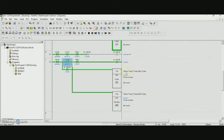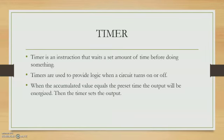The nozzle will operate 3 seconds and at the same time the timer will count for 25 seconds. After 25 seconds the conveyor B will stop to save the power. Timer is an instruction that waits a set amount of time before doing something. Function of timer is used to provide logic when circuit turns on or off. When the accumulated value equals the preset time, the output will be energized.